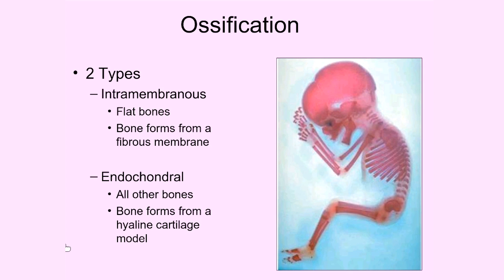There are two different types of ossification, and you'll get much more familiar with them through the activities in this folder, but I want to give a general introduction now. The first type is intramembranous ossification. The name gives you information about what's happening: 'intra' means within, and 'membranous' refers to a membrane. So this is ossification happening within a membrane, and it is the primary way that flat bones in the body are formed.